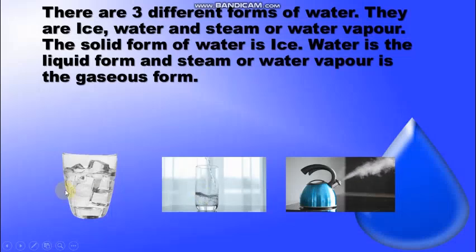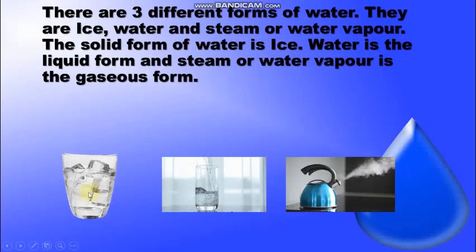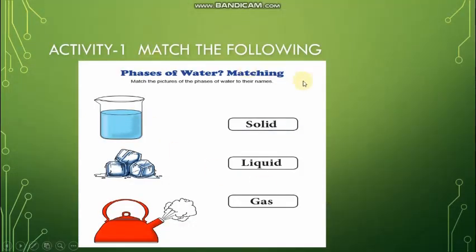Ice is in solid form, water is in liquid form. When we cool water, water changes to ice. When we heat or boil water, it changes to water vapor. You need to do this activity in your notebook — either take a printout or draw it. Water is in liquid state, ice is in solid state, and water vapor or steam is in gaseous state.